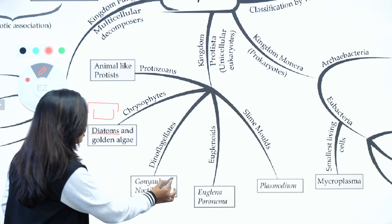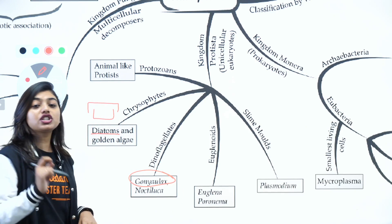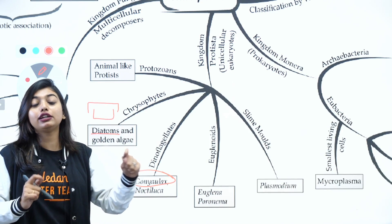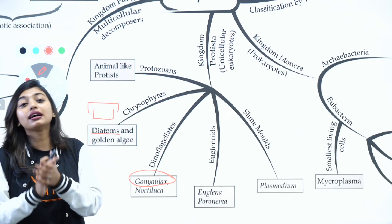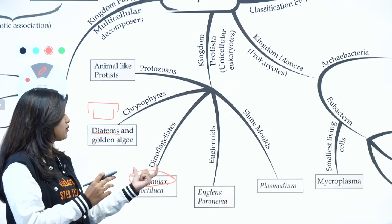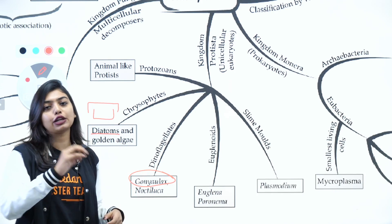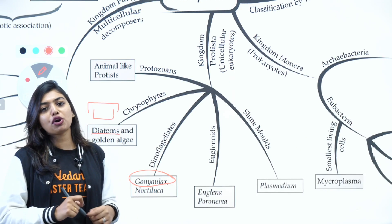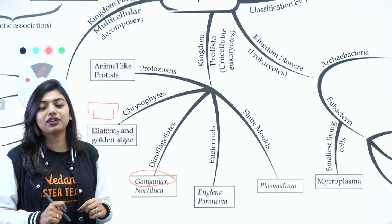When we come to Dinoflagellates, you have to remember about Gonyaulax, which multiplies rapidly to form a red tide. That is, a red tide appearance is given because of this Gonyaulax, which is a red dinoflagellate. The second most important characteristic of dinoflagellates is the presence of flagella - one longitudinal and one transverse flagella.